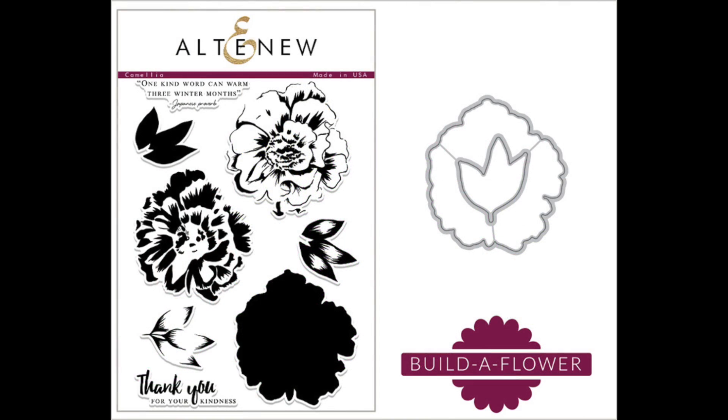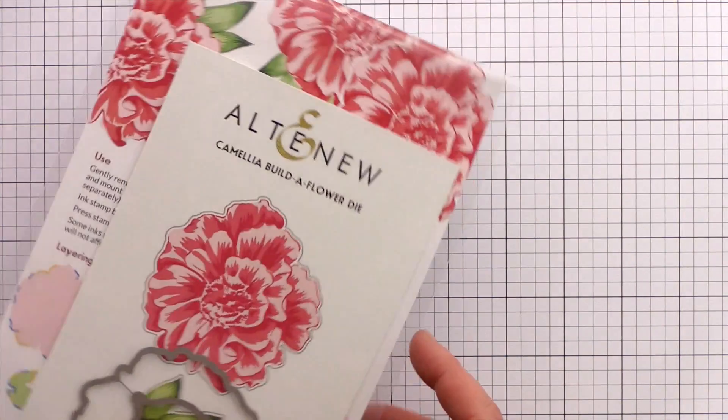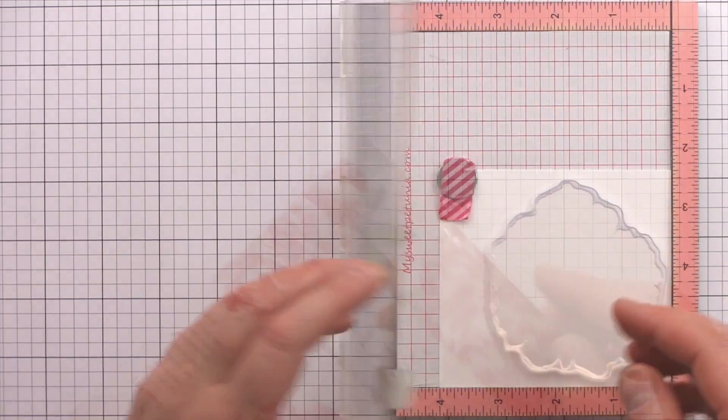The Camellia set is a stamp layering set to create one large bloom with three layers and one leaf sprig with three layers. There are two sentiments. The set comes with the matching die. The individual stamps and dies won't be available separately, they will only come together as the set.